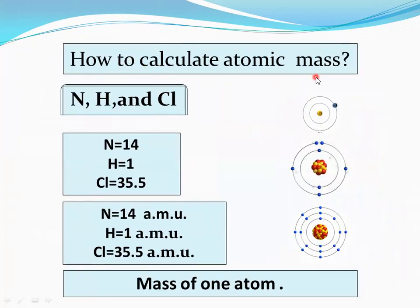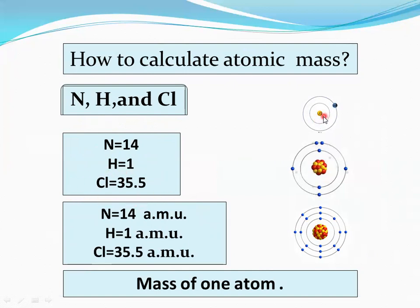How to calculate atomic mass: we use the periodic table to get the atomic mass. Here we present three elements — nitrogen (mass number 14), hydrogen (mass number 1), and chlorine (mass number 35.5). Observe the diagram: only one proton is present inside the nucleus of the hydrogen atom, so the mass number of hydrogen is 1. Similarly, observe the nitrogen atom.